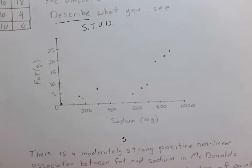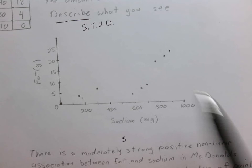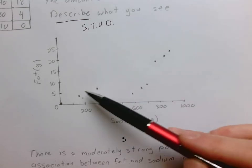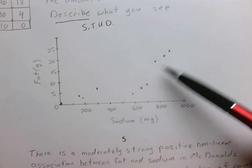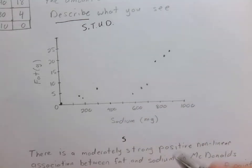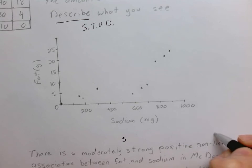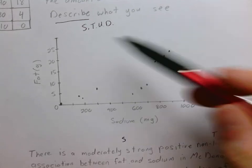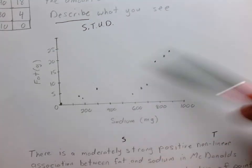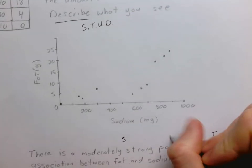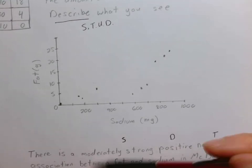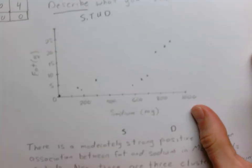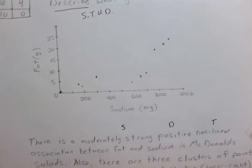Now we look for the type — is that a linear relationship or not? I see a little bit of curvature here. As you move from the lower left to the upper right, we see a little bit of curvature, so that is going to be a non-linear relationship. We'll come back to unusual features in just a moment. For the direction, as we go from left to right that is increasing, so that is positive. Always include context as well. So: there is a moderately strong positive non-linear association between fat and sodium in McDonald's salads.